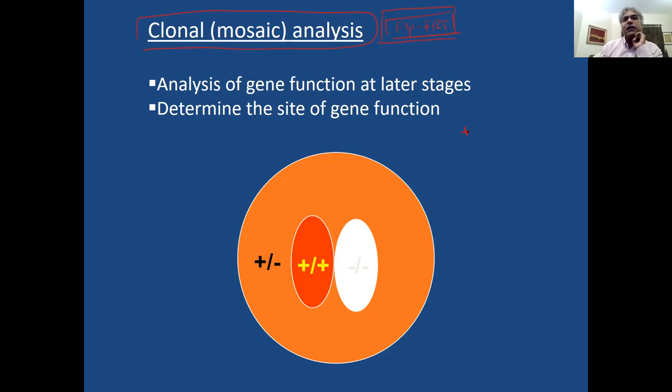So let's say you generated a mutant. So asterisk is a mutant and you have it over a balancer. You have it over a balancer because this heterozygous is alive, it survives. But as soon as you have homozygous mutation, it's dead.